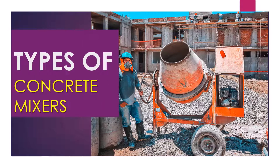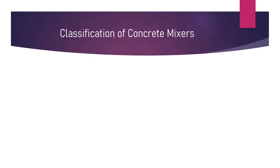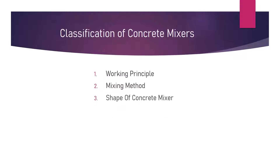The concrete mixer machines can be classified into 13 types based on several categories. They can be classified based on the working principle, the mixing method, the shape of the concrete mixture, and the discharging method. Some miscellaneous types of mixtures available in the market are also mentioned in this video.